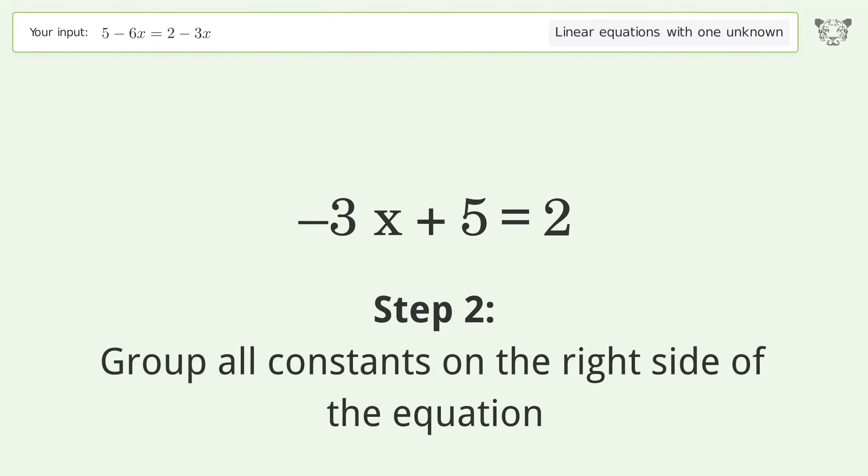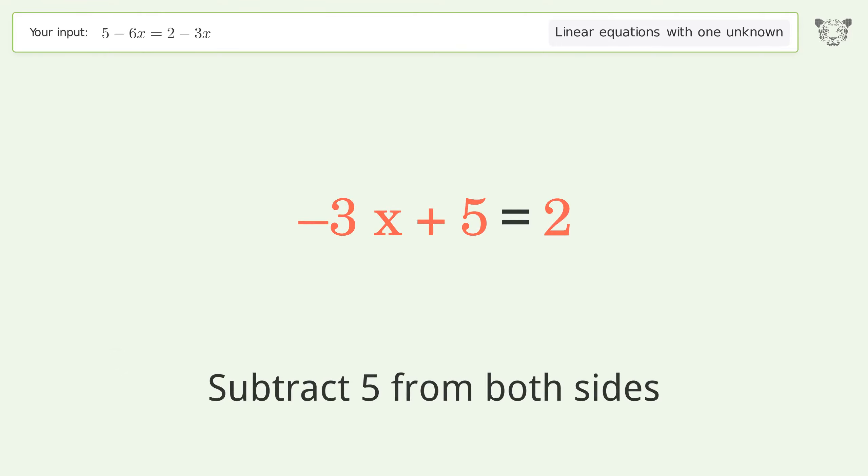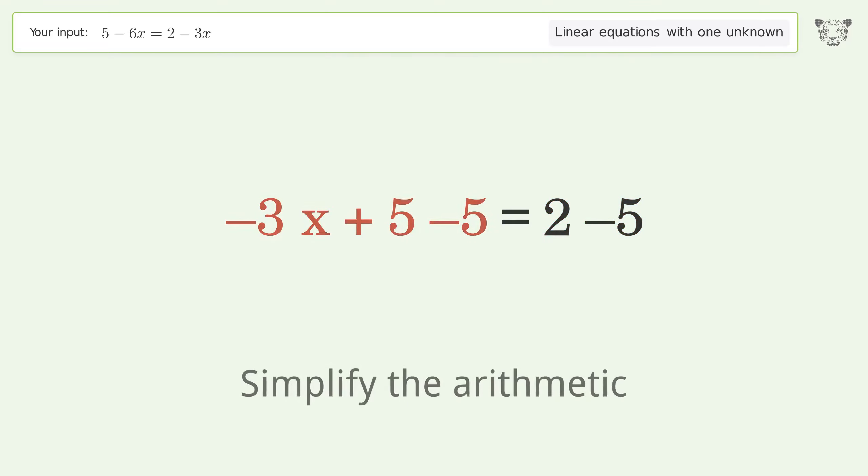Group all constants on the right side of the equation. Subtract 5 from both sides and simplify the arithmetic.